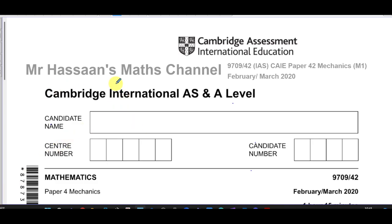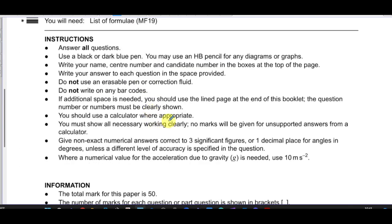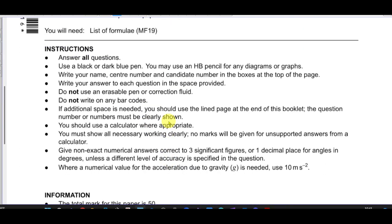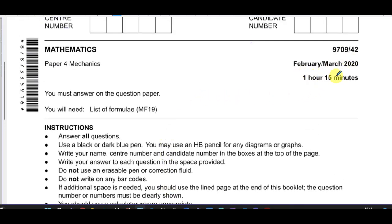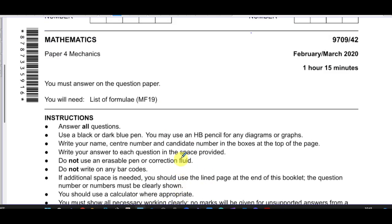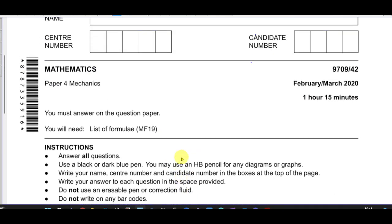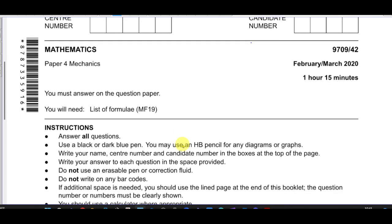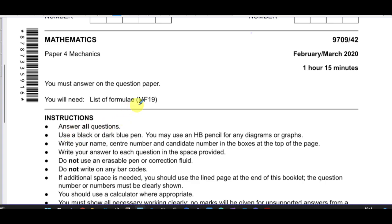So we're going to start this paper. Now, the first thing that we need to notice, if you look at the paper, this particular paper is one hour 15 minutes, as opposed to the paper one, which is the pure maths for AS, which is one hour and 50 minutes. It's less time, less questions and less marks as well. This has got 50 marks. And the paper one has got 75 marks. So its total is 125. So it says here, you get a formula sheet, which doesn't really have that much for mechanics, just the equations of motion, basically for mechanics.